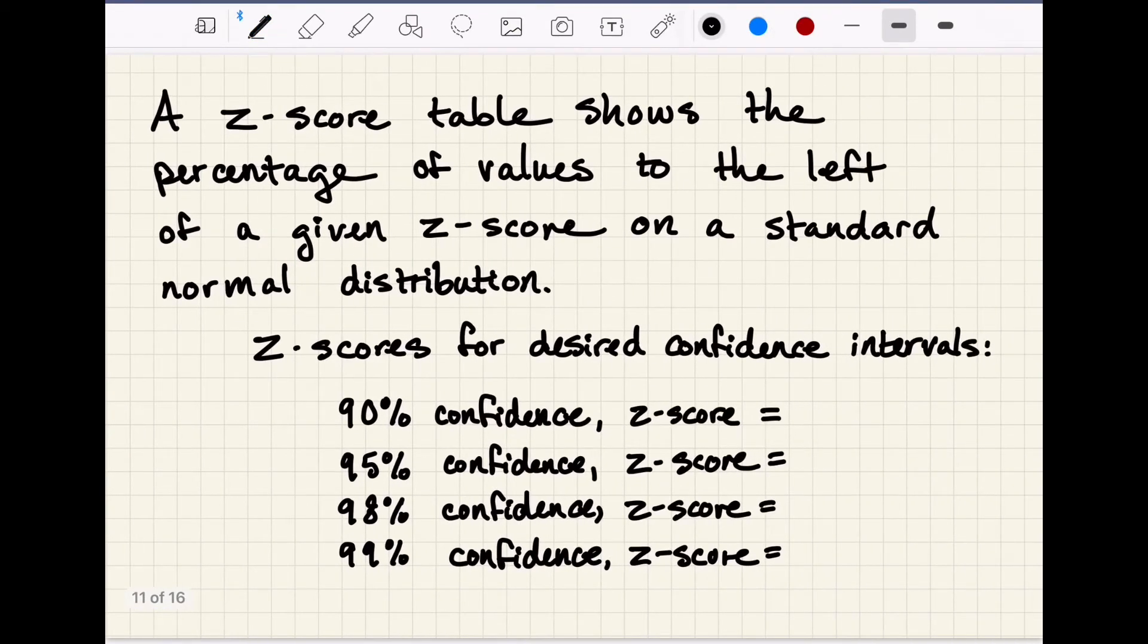The way we choose that level is by setting a z-score. If we remember on that bell curve diagram, the z-score represents the number of standard deviations away from the middle point of the curve or the mean. The higher the z-score, the higher percentage of the distributed values will cover and the higher our confidence level.